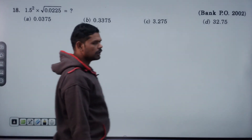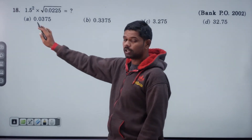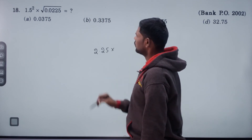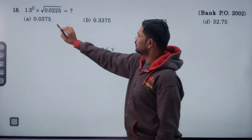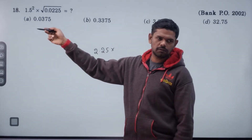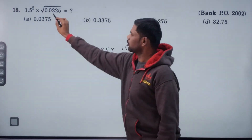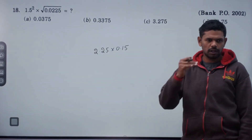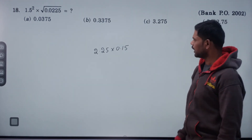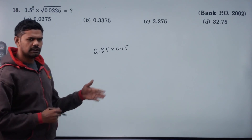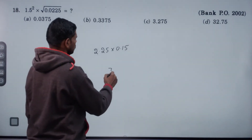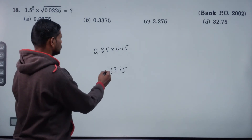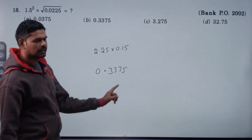1.5 squared value is 2.25. 0.025 — how many decimals? 4 decimals give 2 decimals; 3 decimals give 6. Multiply as 15: 225 into 15. 15 cube value is 15 squared into 15. Double 3.75. There are 4 decimal places, so answer is 0.3375.